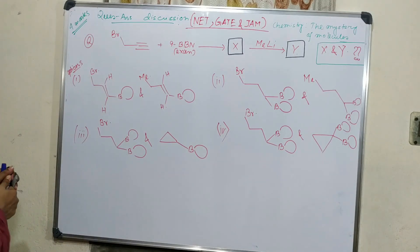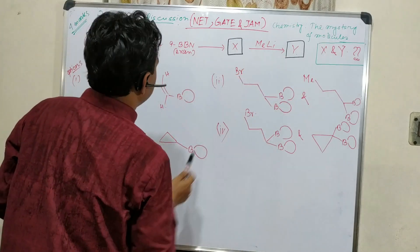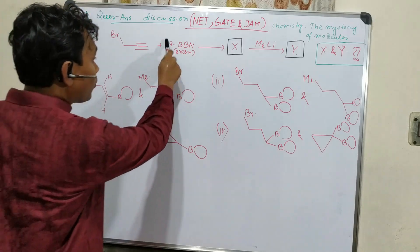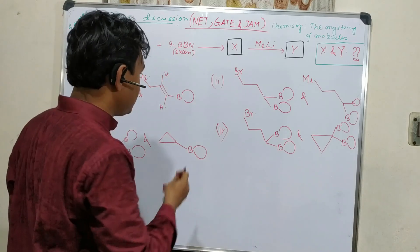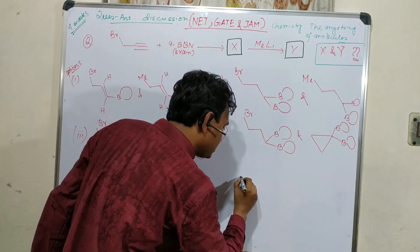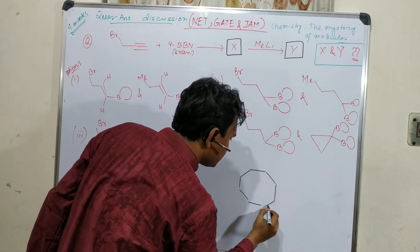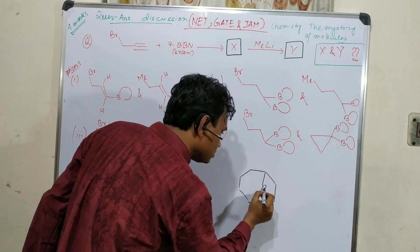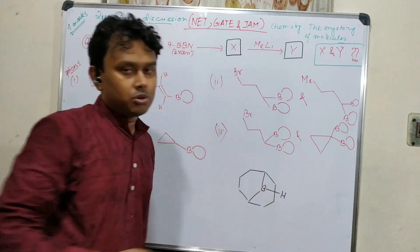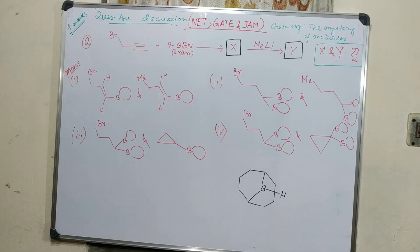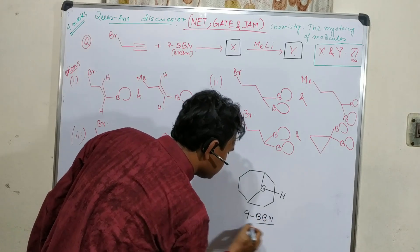The question is where X reacts with 9-BBN. First of all, you should know what is 9-BBN. In one of my previous videos, I have explained in detail what is 9-BBN. 9-BBN is a bulky hydroboration reagent. How we can draw it — this B, this H — so it contains a single BH bond. This is a very important reagent, so please keep this thing in mind.